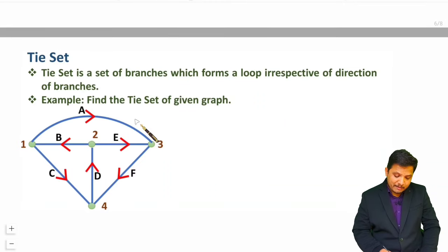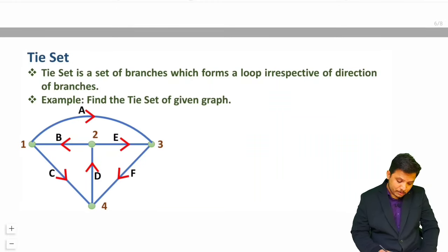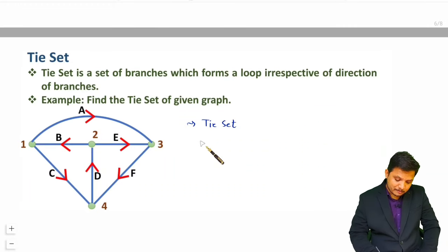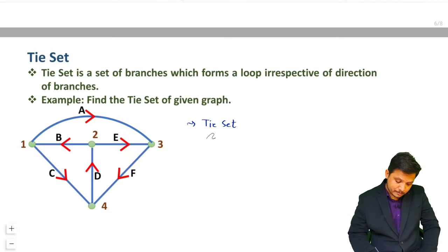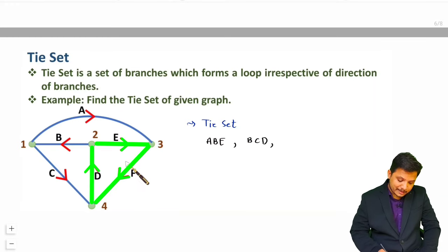Here we have one graph. Let us identify how many tie sets are there — that means how many loops are there — and you don't need to worry about direction. The first tie set you can see is AEB, forming one loop. The second tie set is BCD. The third tie set is DEF.